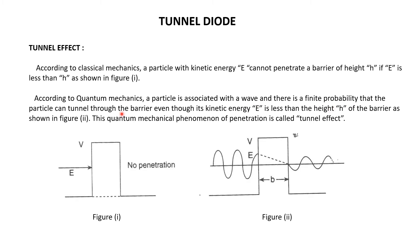Even though the kinetic energy of the particle E is less than the barrier energy V, due to this wave nature, the particle may penetrate through the junction and reach the other side of the barrier. This quantum mechanical phenomenon of penetration is called tunnel effect.